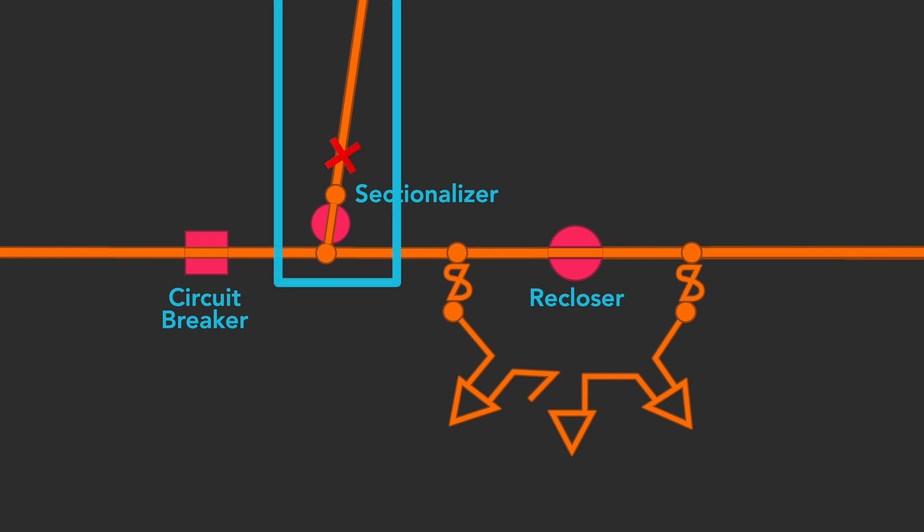Sectionalizers and fused cutouts can be used to section off part of a circuit, so that the fault occurring beyond the device can be isolated, allowing the rest of the circuit to remain energized.